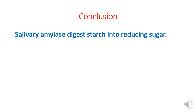As a conclusion, salivary amylase digests starch into reducing sugar. As mentioned, maltose is a reducing sugar, and glucose is also a reducing sugar. Glucose is a monosaccharide.